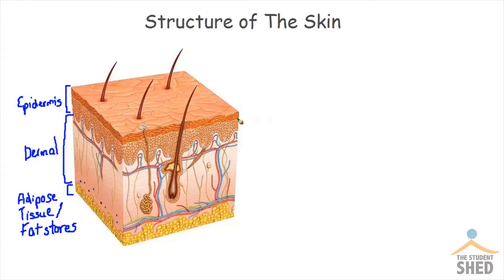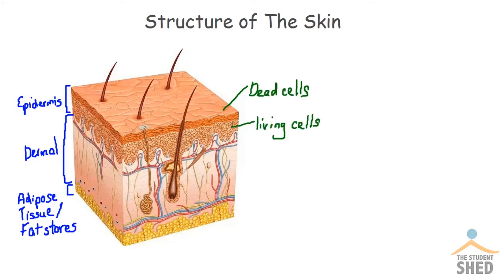The outermost layer of the skin is the epidermal layer. If you take a look at your arm, what you can see is the epidermal layer. It includes dead cells, and underneath those dead cells are living cells. As the dead cells are shed off, the living cells eventually replace the dead cells.